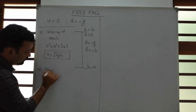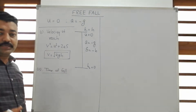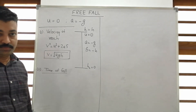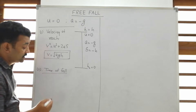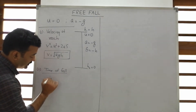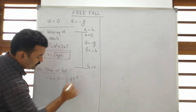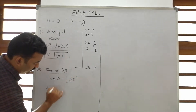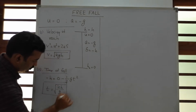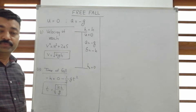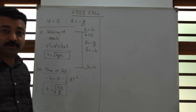The second factor is the time of fall — the time taken by the particle to reach the ground. We can use s = ut + ½at², which gives minus h = 0 minus ½gt². Rearranging, t = √(2h/g).